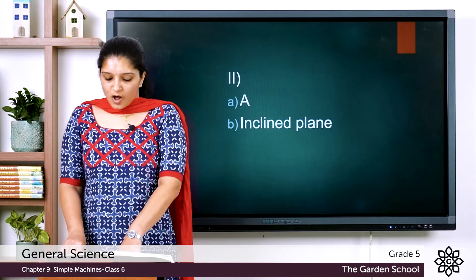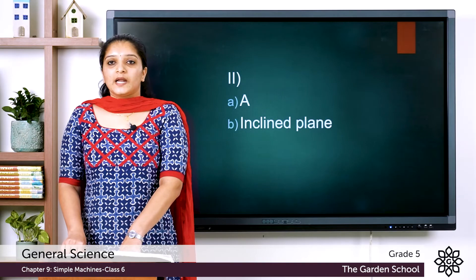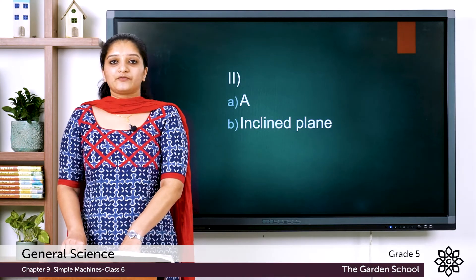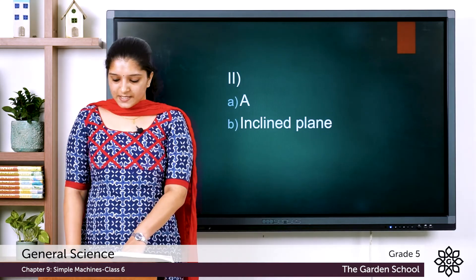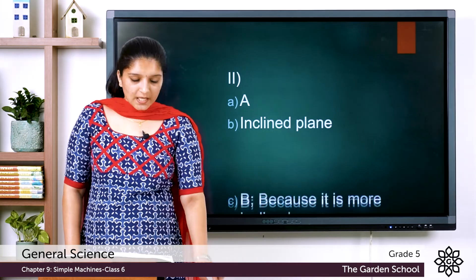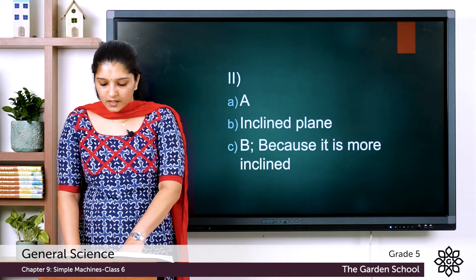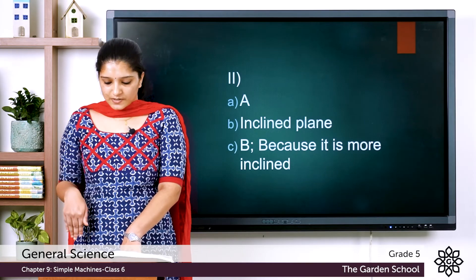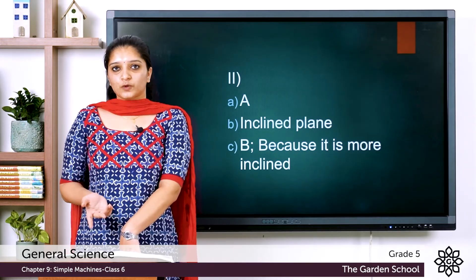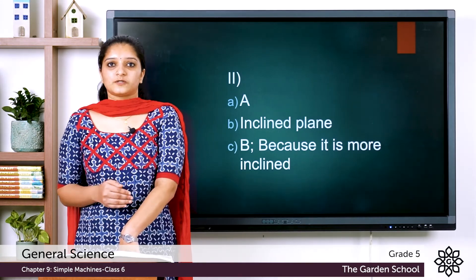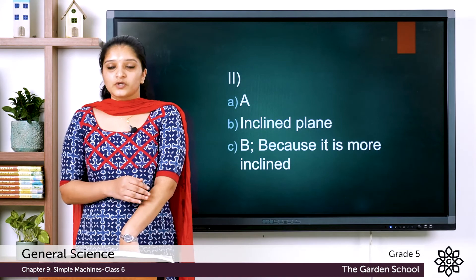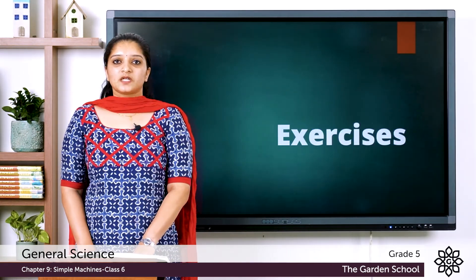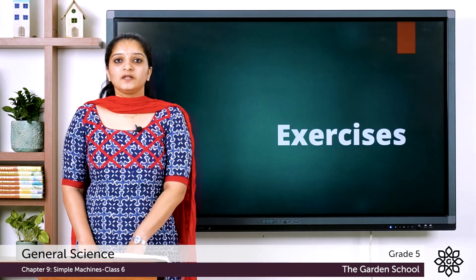The third question: on which slope do you think less effort is required to shift the car, and why? The answer is option B, because it is more gradual. When the steepness of the inclined plane reduces, the effort required to lift the heavy object also decreases. So the answer is option B. That was all about the exercise questions of chapter 9 — simple machines.